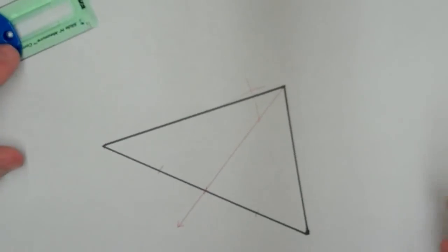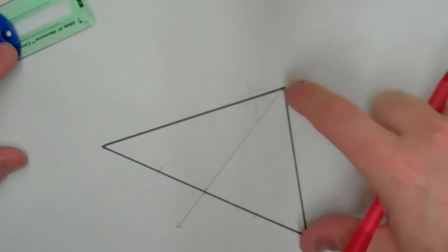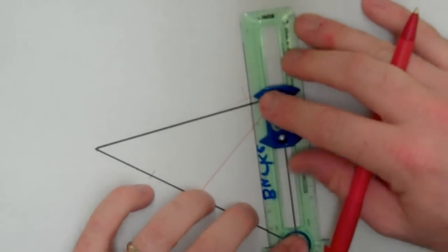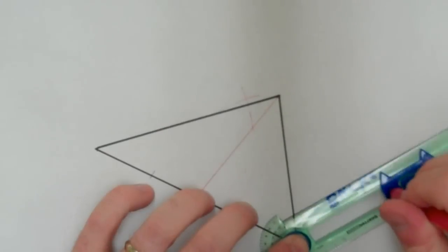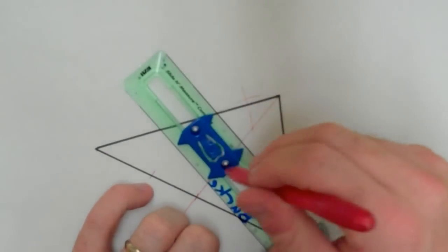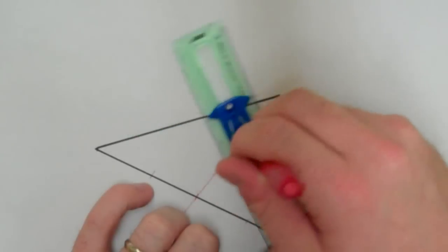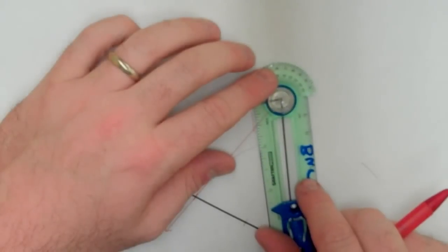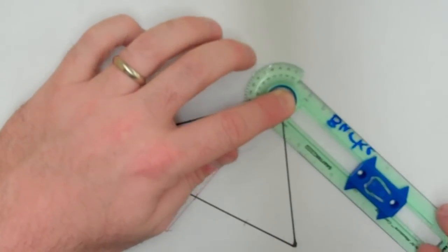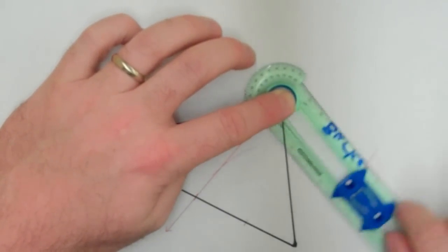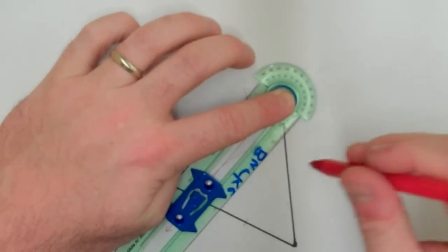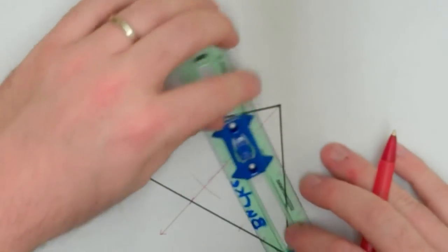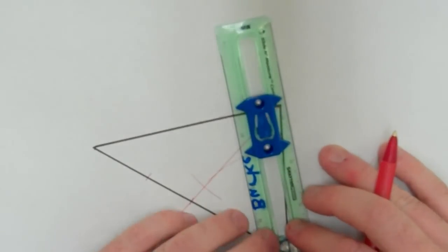So, now what I'm going to do is I'm going to repeat the process over here and I'm going to find the midpoint of this segment. Your construction sometimes will get a little bit messy. That's okay. That's nothing to be concerned about. I need to extend this one out just a little bit.